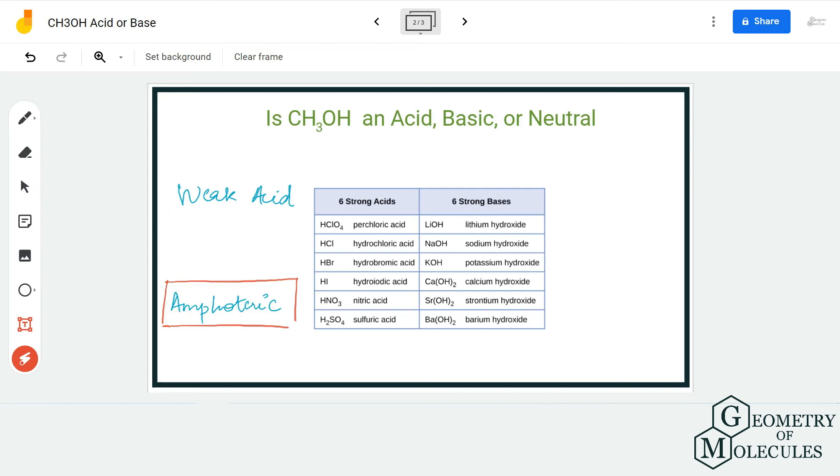we can say that it is an amphoteric compound as it has both basic and acidic properties. It depends on the molecule it is reacting with whether it will exhibit acidic or basic properties. In a nutshell, methanol is